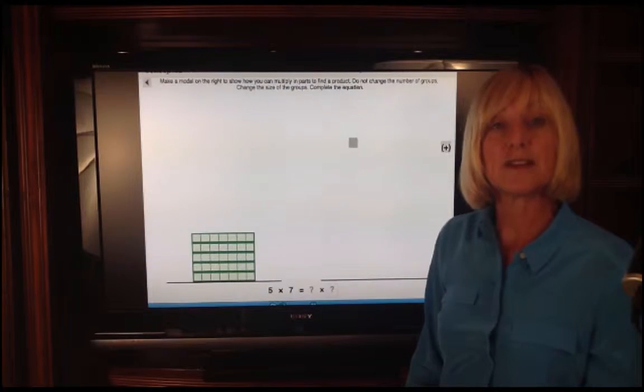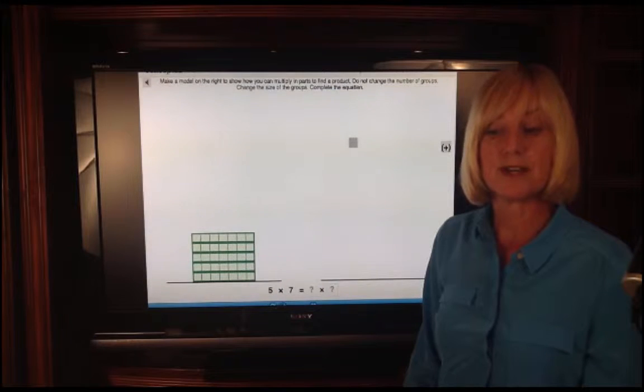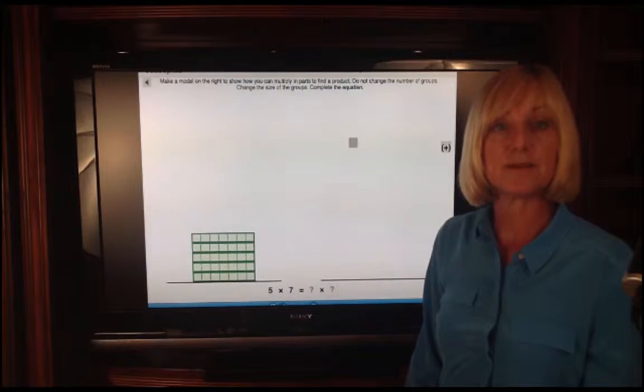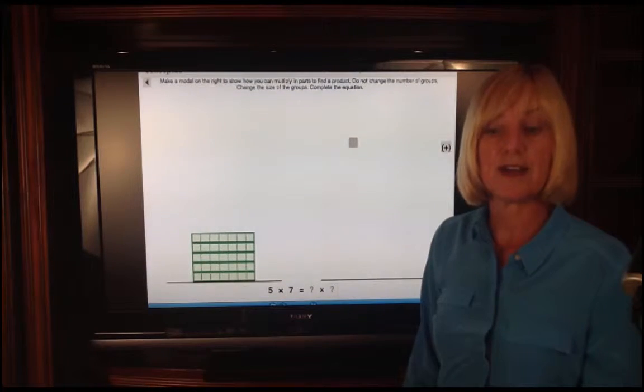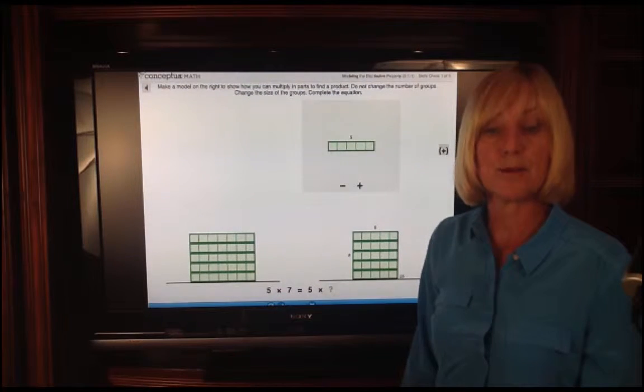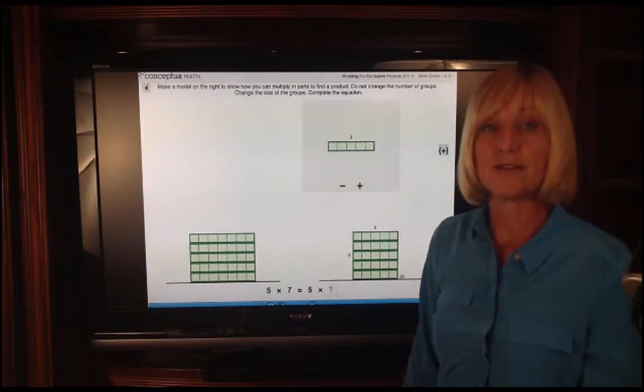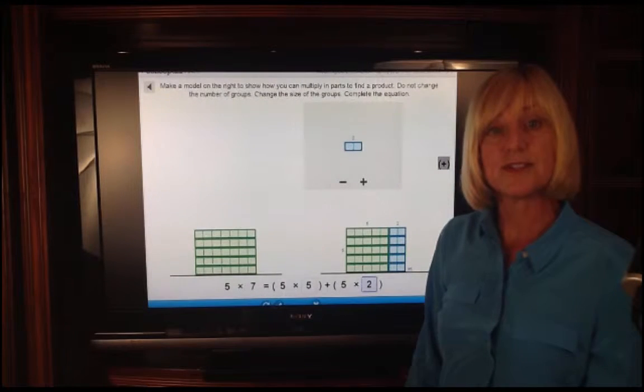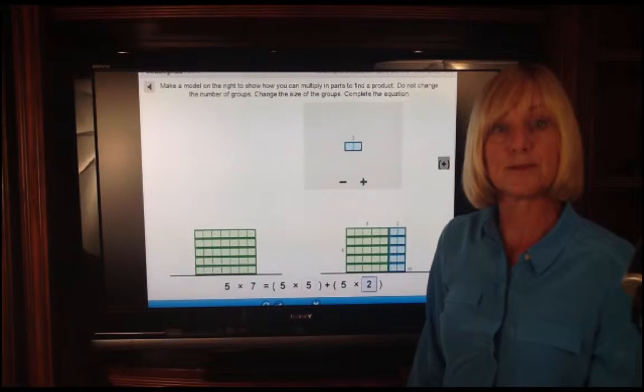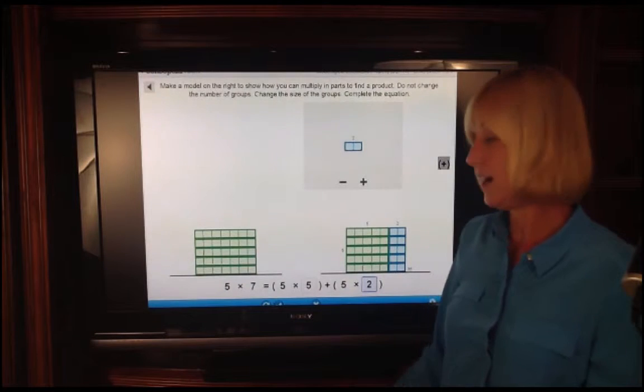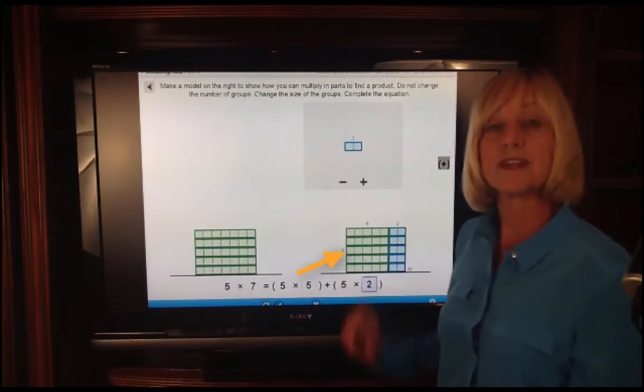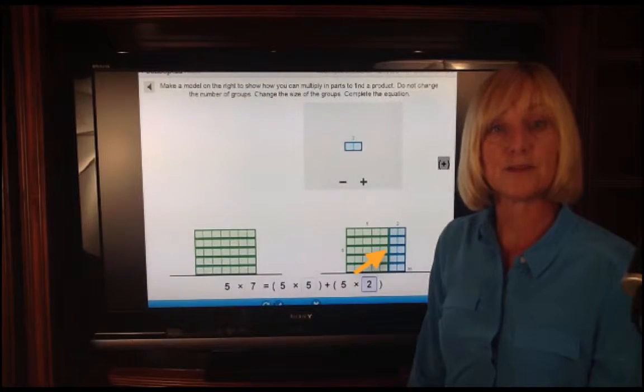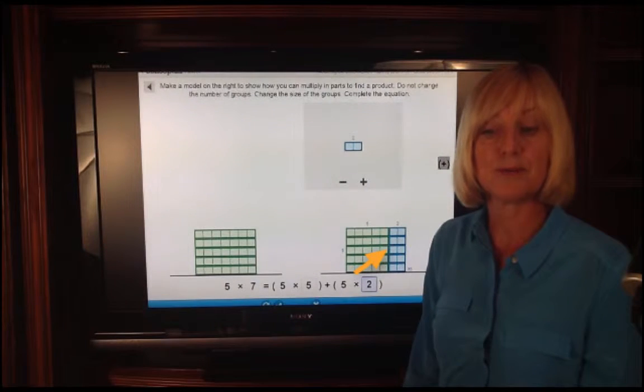As they work through the first week, they start to get introduced to numbers, so they have a model for five times seven. Perhaps they don't know that fact. They can create a two-part model because they might know five groups of five and five groups of two. And they start to see the relationship between the model and the parentheses. Five groups of five here represents the green part of the model, and five groups of two represents the blue part of the model.